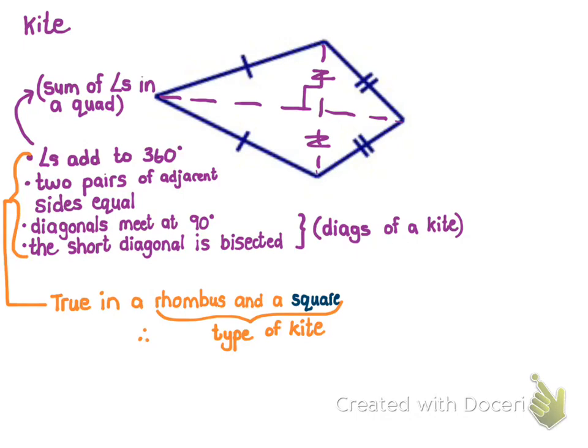That's the quadrilateral family tree — it's quite complicated and difficult to remember all these properties. I find that the picture at the beginning is the easiest thing to remember: how they're all related and what you have to add to a shape to make a new shape. Try to remember all these geometry reasons, write summaries, draw each shape, and label in all the properties, because it will be really useful for the rest of your maths.